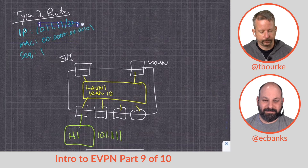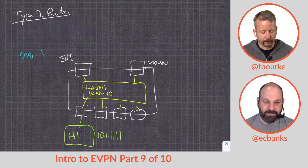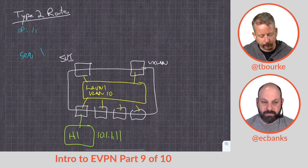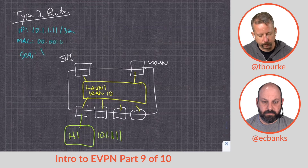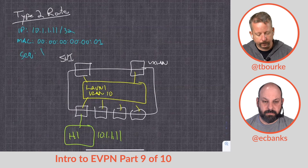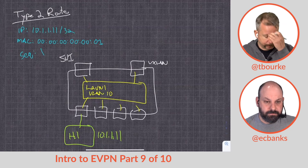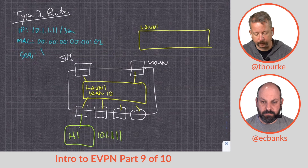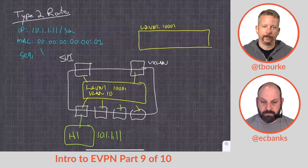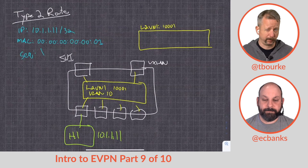The IP address — 10.1.1.11/32 — is a host route. The MAC address is also learned: 00:00:00:00:00:01. There's going to be a route target on this, and the route target is based on which VNI and which local VLAN it's mapped to. All the leafs that have the same Layer 2 VNI corresponding to that route target will receive it.